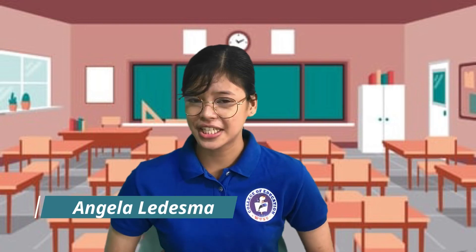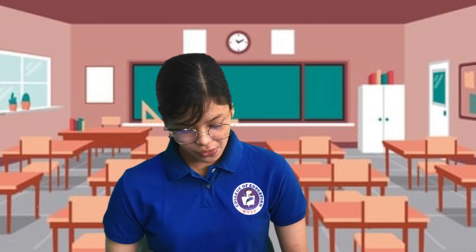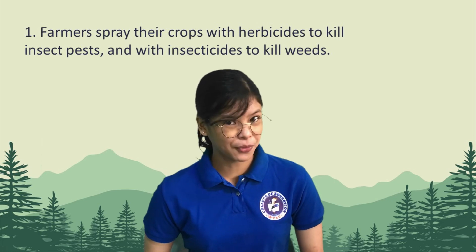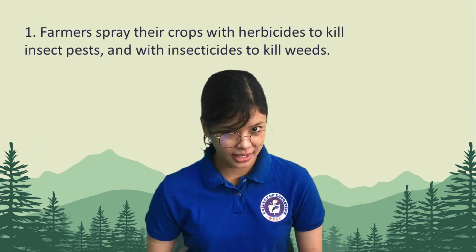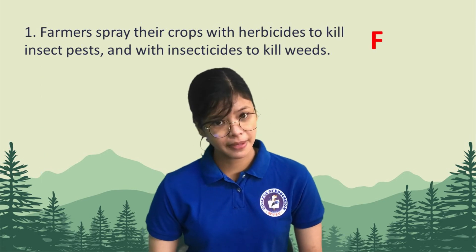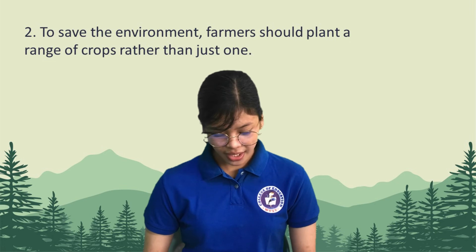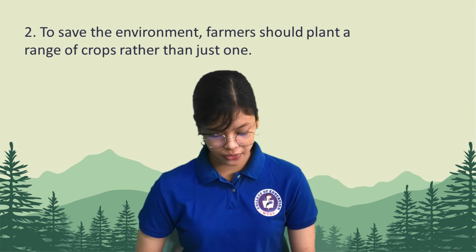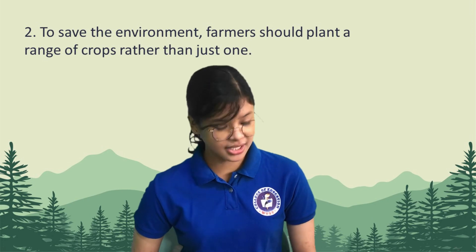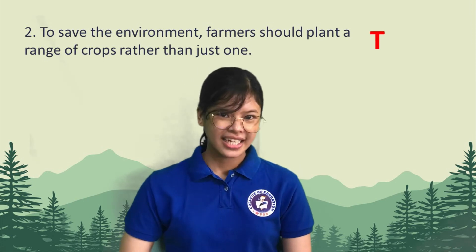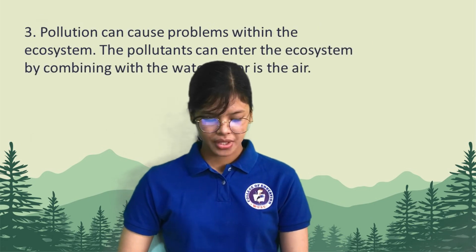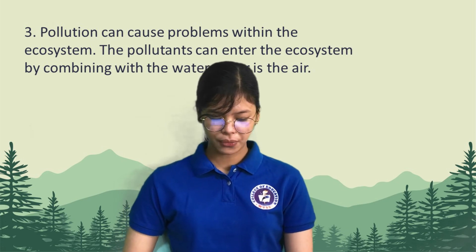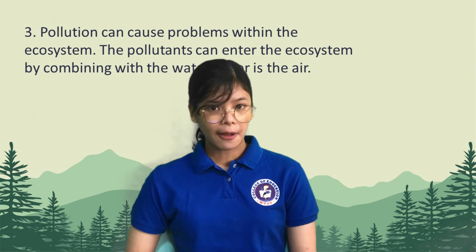Okay, we already received your answers in our Google Forms. Let us now answer the test together. Number one: farmers spray their crops with herbicides to kill insect pests and with insecticides to kill weeds. This is false — it should be pesticides. Number two: to save the environment, farmers should plant a range of crops rather than just one. This is true. Number three: pollution can cause problems within the ecosystem. The pollutants can enter the ecosystem by combining with water vapor in the air. This is obviously true.